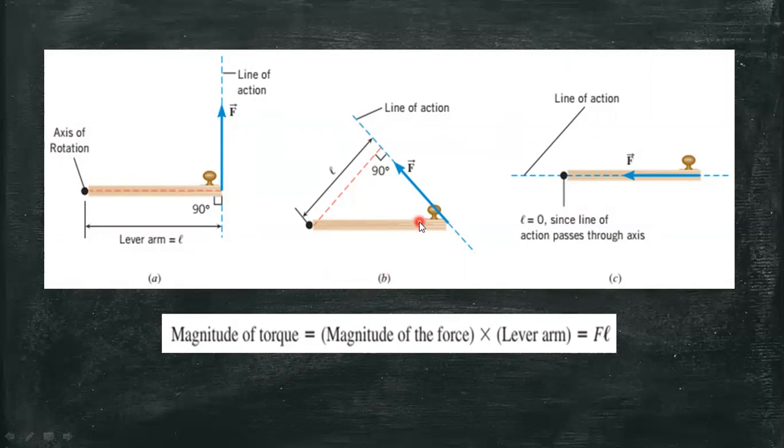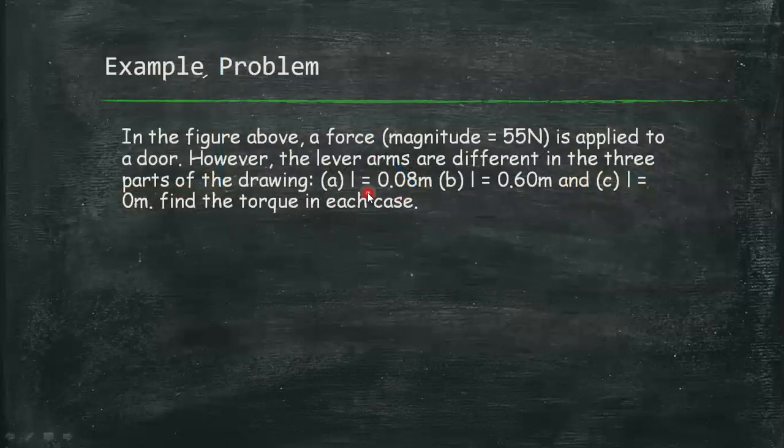Here in part B, we can see that the force is inclined or makes an angle with the door at a certain angle. Our lever arm is now here, making perpendicular or 90 degrees to the line of action. Same thing here at part C, we can see that the line of action crosses or passes through the axis of rotation. Therefore, our lever arm is 0.